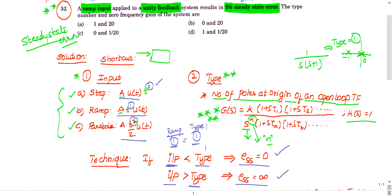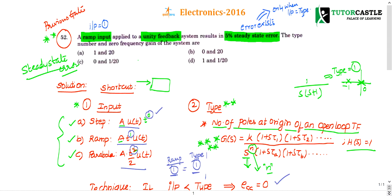Now back to the question. A ramp input means t power 1, so input value = 1. It is a unity feedback system — this is necessary for applying steady state error formulas directly. For a non-unity feedback system, you must first convert it to unity feedback.